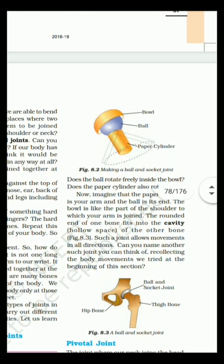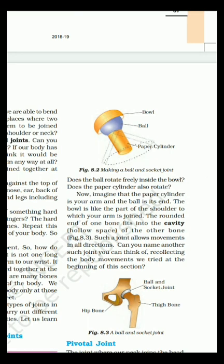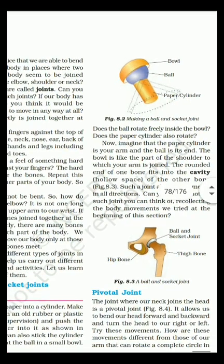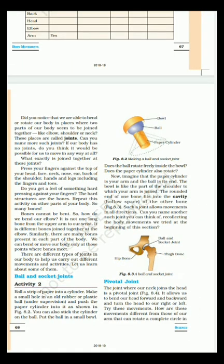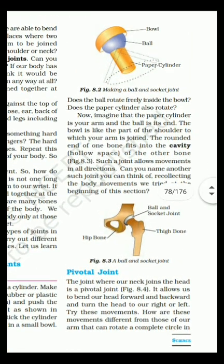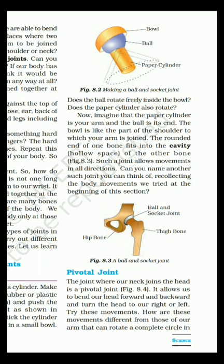Ball and socket joints. In this picture we can see that making a ball and socket joint. Top portion is bowl and the middle portion is ball. And this is paper cylinder. The rounded end of one bone fits into the cavity, that is hollow space of other bone. A ball and socket joint. Right! Thigh bone and hip bone. This is ball and socket joint. Thus we can move in all directions.